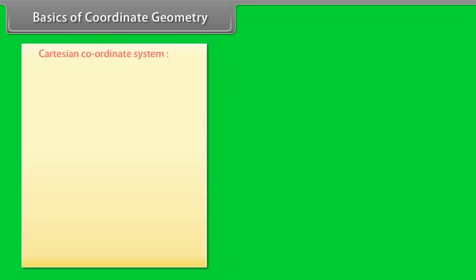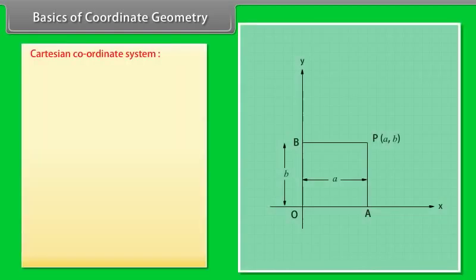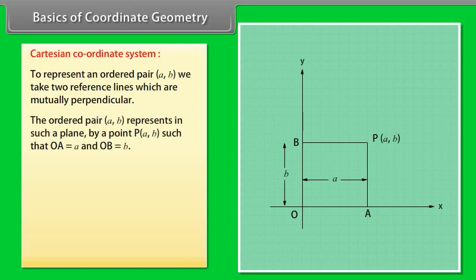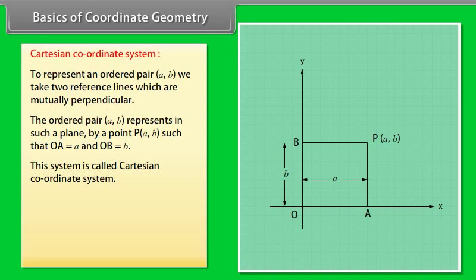Basics of coordinate geometry — Cartesian coordinate system. To represent an ordered pair (A, B), we take two reference lines which are mutually perpendicular. The ordered pair (A, B) represents a point P(A, B) in such a plane such that OA is equal to A and OB is equal to B. This system is called the Cartesian coordinate system.